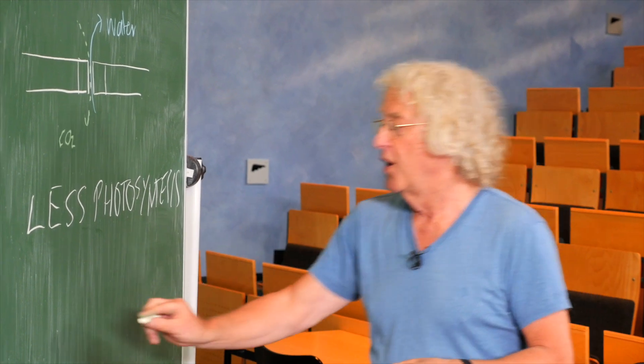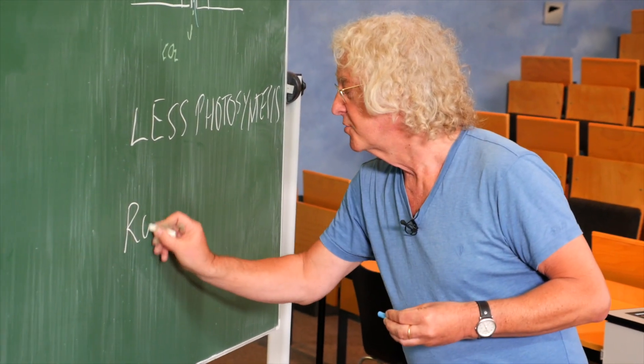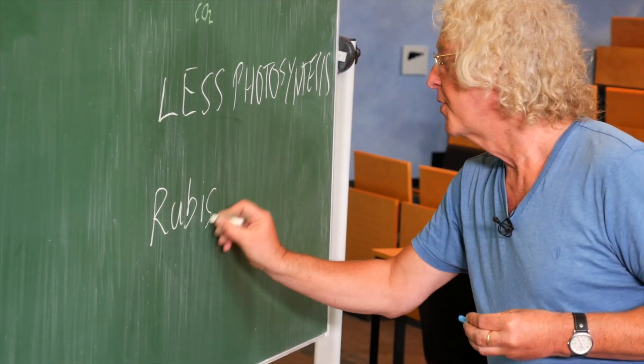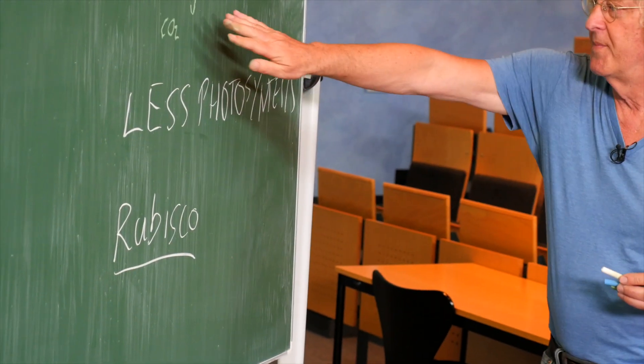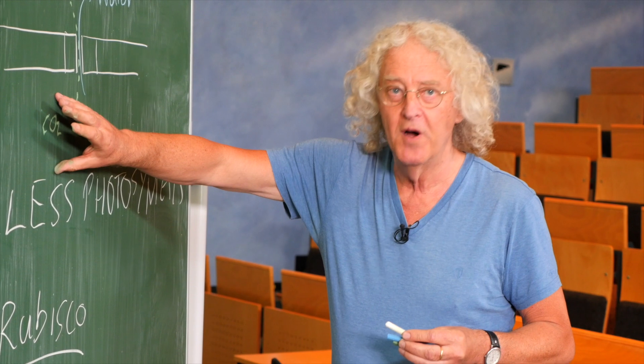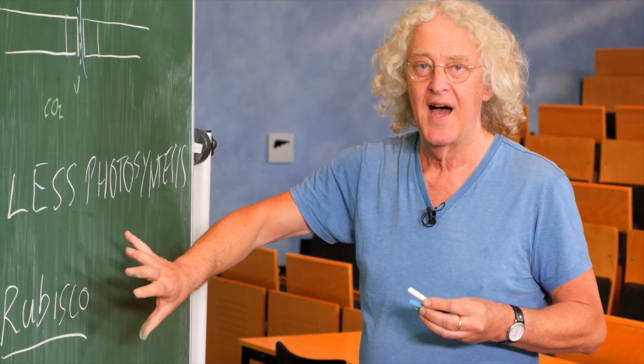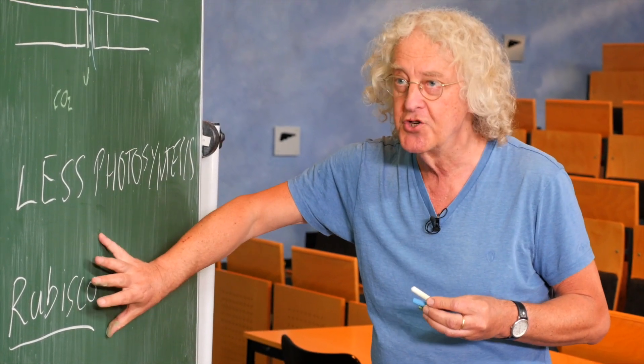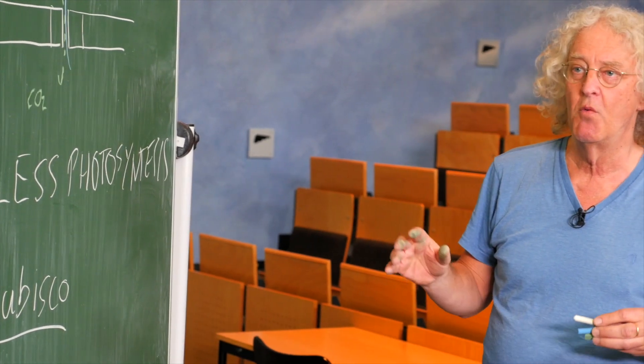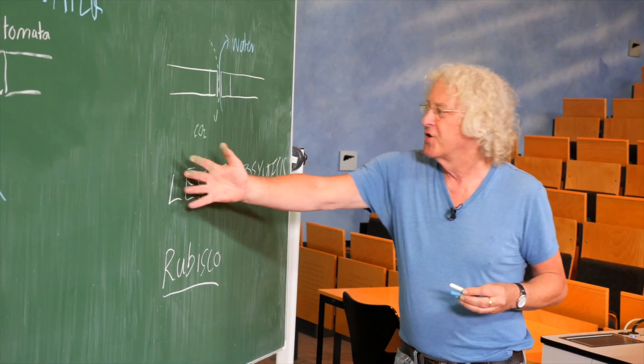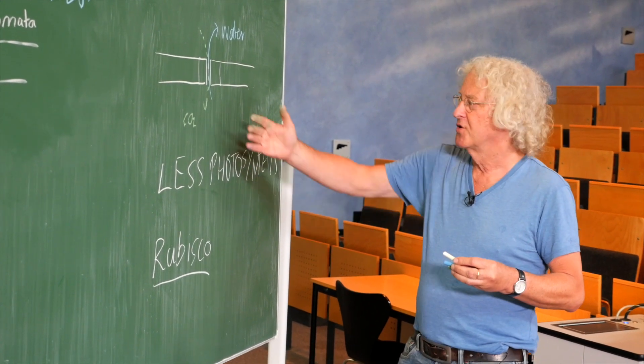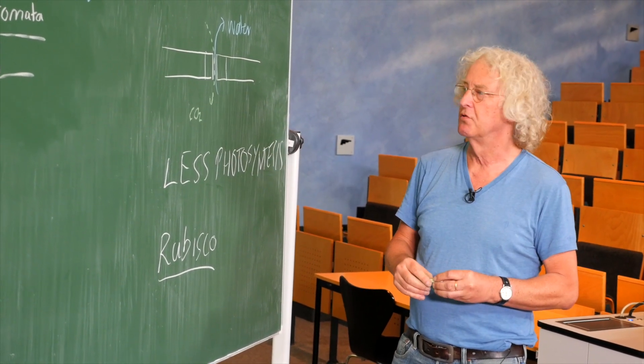This problem is even larger, because the enzyme or the protein that uses carbon dioxide has a low affinity for carbon dioxide and a side reaction with oxygen. I explained that in the video, Why Plants Make a Mistake in Photosynthesis. So this is much less photosynthesis when the carbon dioxide falls. So to save water, less photosynthesis.